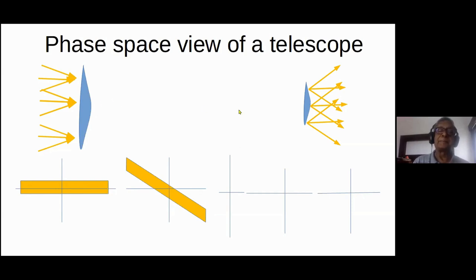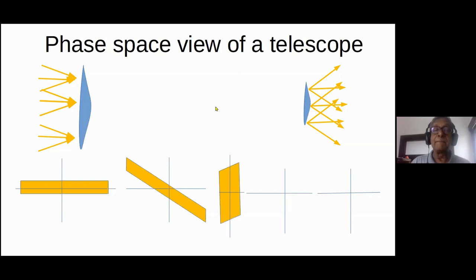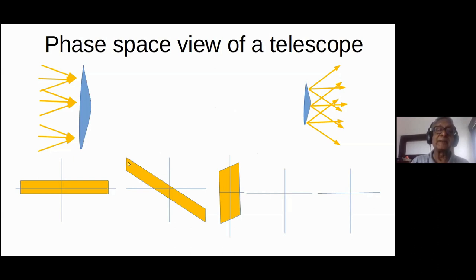After the lens, you allow the rays to propagate — free propagation moves the upper half of phase space to the right. After traveling to the focus of the first lens, which in normal optics is where you form an image of the sun, the phase space picture shows the beams from the top of the sun have come to a focus — all at the same value of y but different values of theta. The telescope then continues to the eyepiece, and this is what the phase space looks like just before the eyepiece.